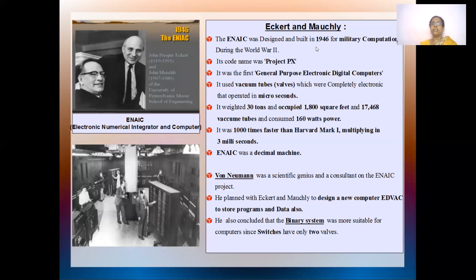The ENIAC was designed and built in the year 1946 for military computation during World War II. Its code name was Project PX. It was the first general purpose electronic digital computer. It was powered by vacuum tubes or valves, which were completely electronic, and it operated within microseconds. It weighed 30 tons, occupied quite a lot of space, had so many vacuum tubes, and the power was 160 kilowatts. It was a thousand times faster than the Mark 1 computer.